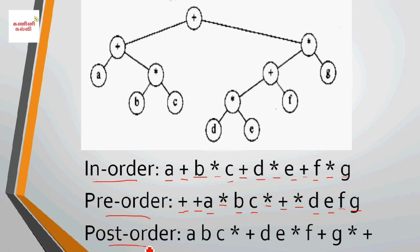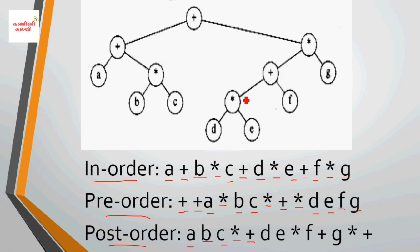Last is post-order traversal — left, right, then root. Top root is plus (+), processed last. We go left first to the 5-node subtree. Left of that is A, so A is processed first. Then right 3-node subtree: left is B, right is C, root is star (*), so B C *. Then that subtree root is plus: B C * +. Then right subtree: left is D, right is E, root is star (*): D E *. Then root plus (+), then F, then G. Post-order result: A B C * + D E * + F G +.